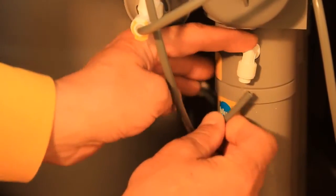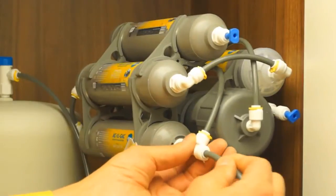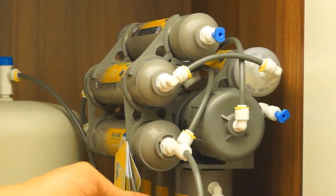When the rinsing is complete, replace the additional tube with the pre-filter tubing. Connect the tubes as they were connected at the very beginning. Connect all the other tubes as well.